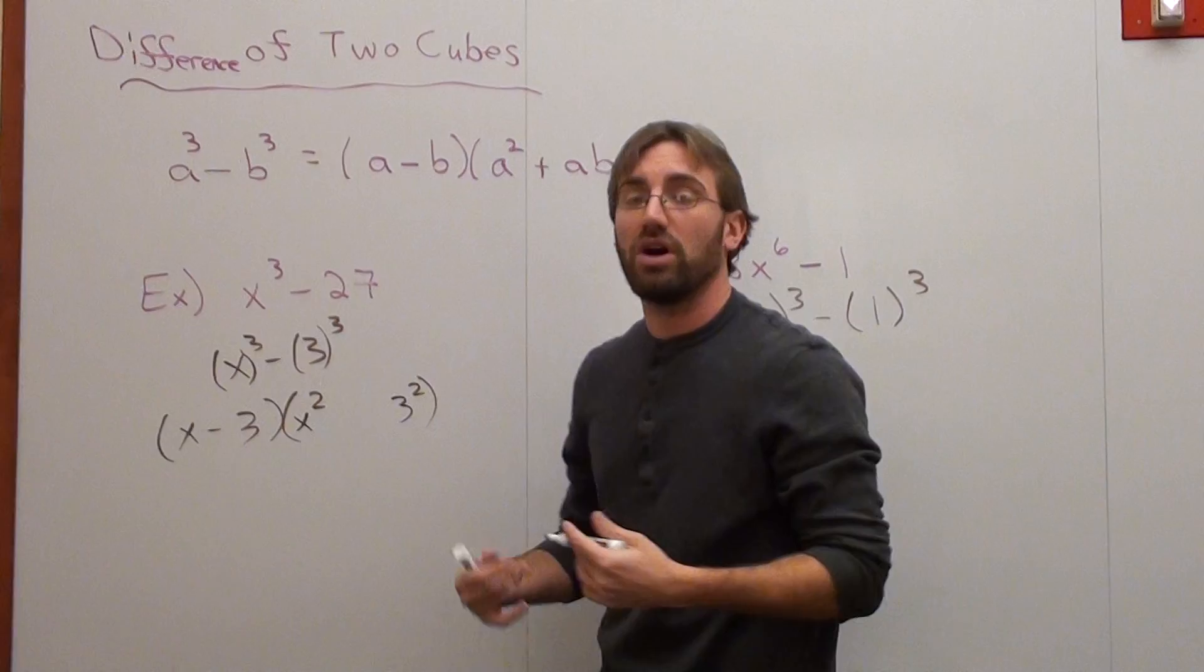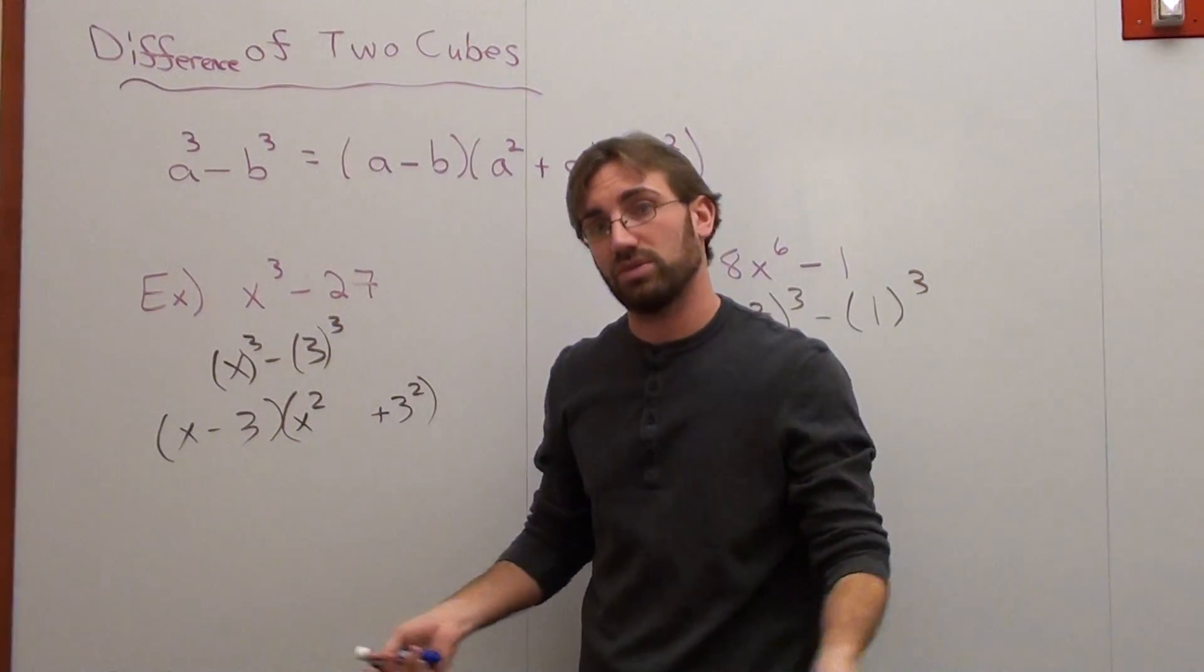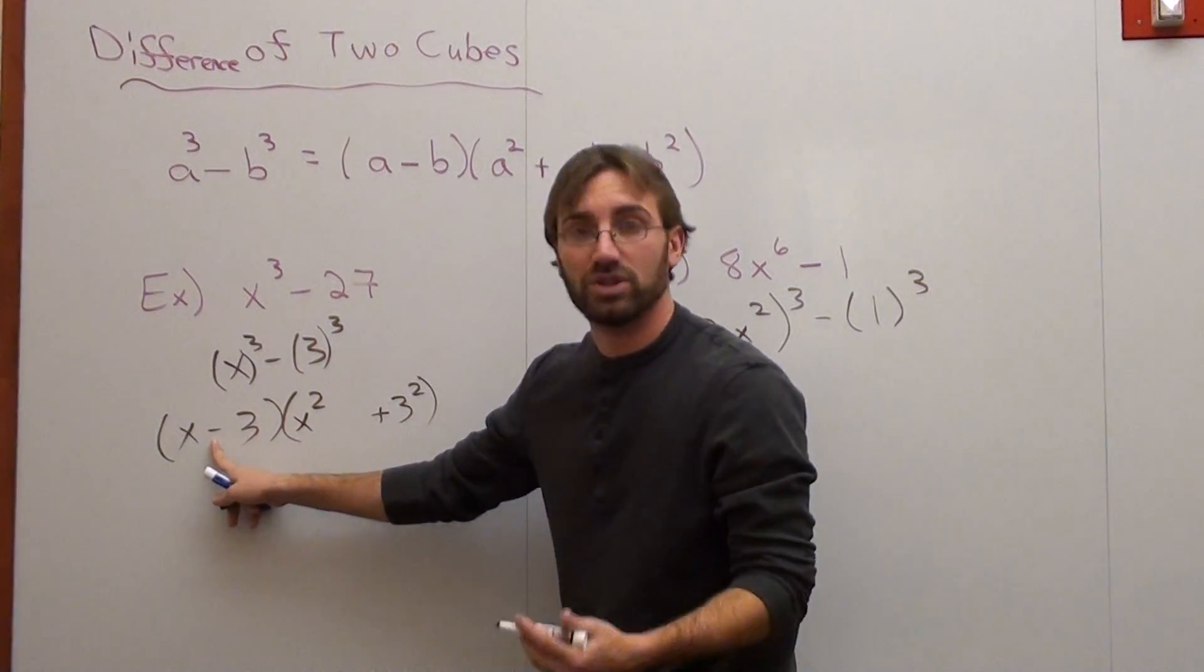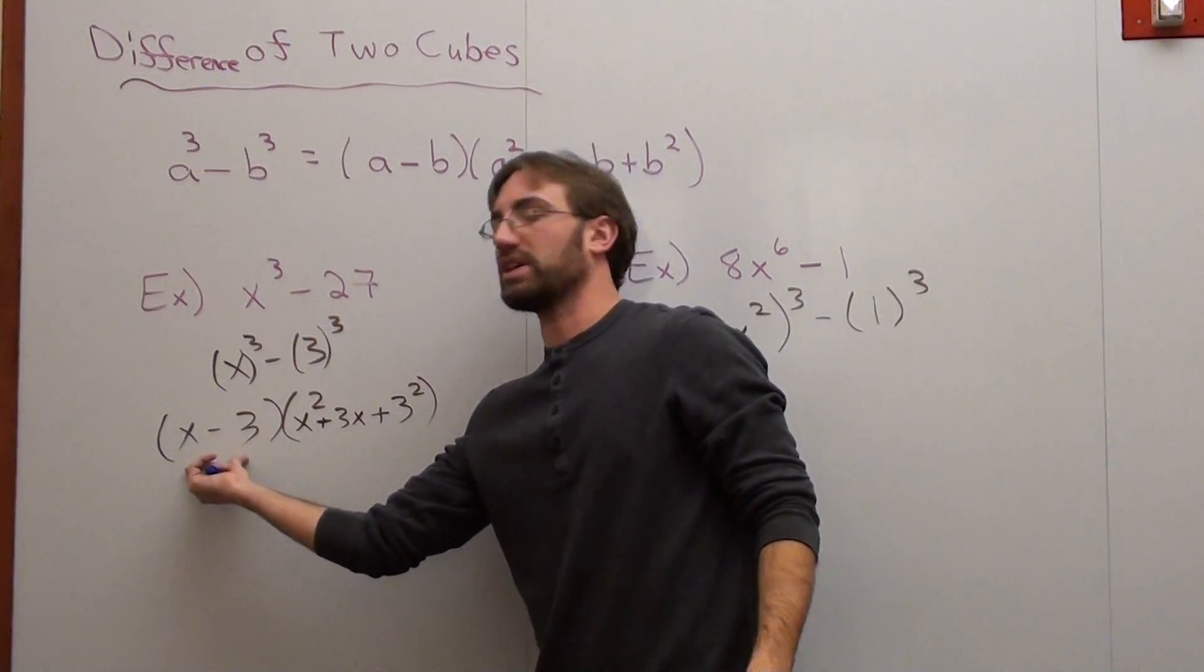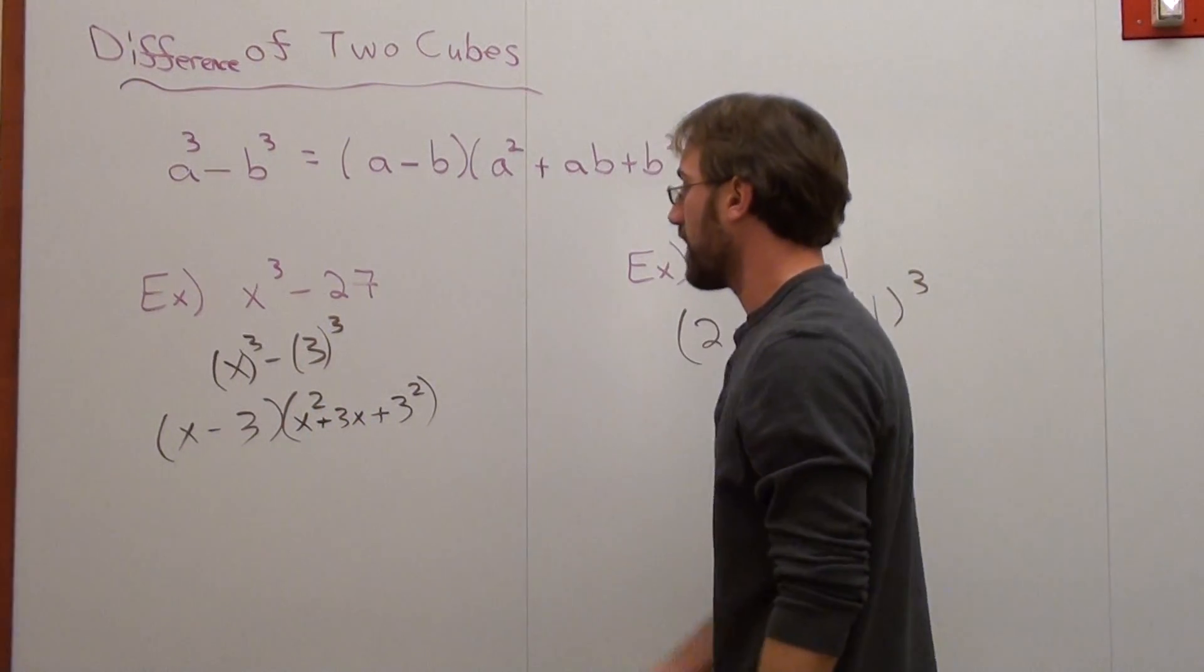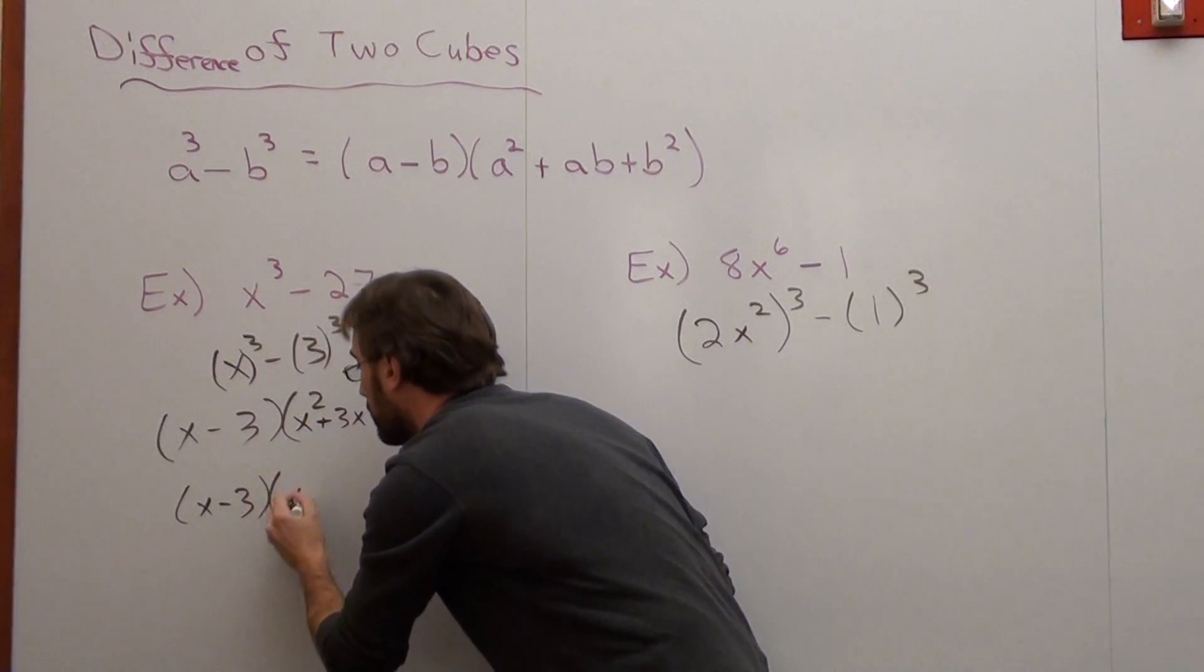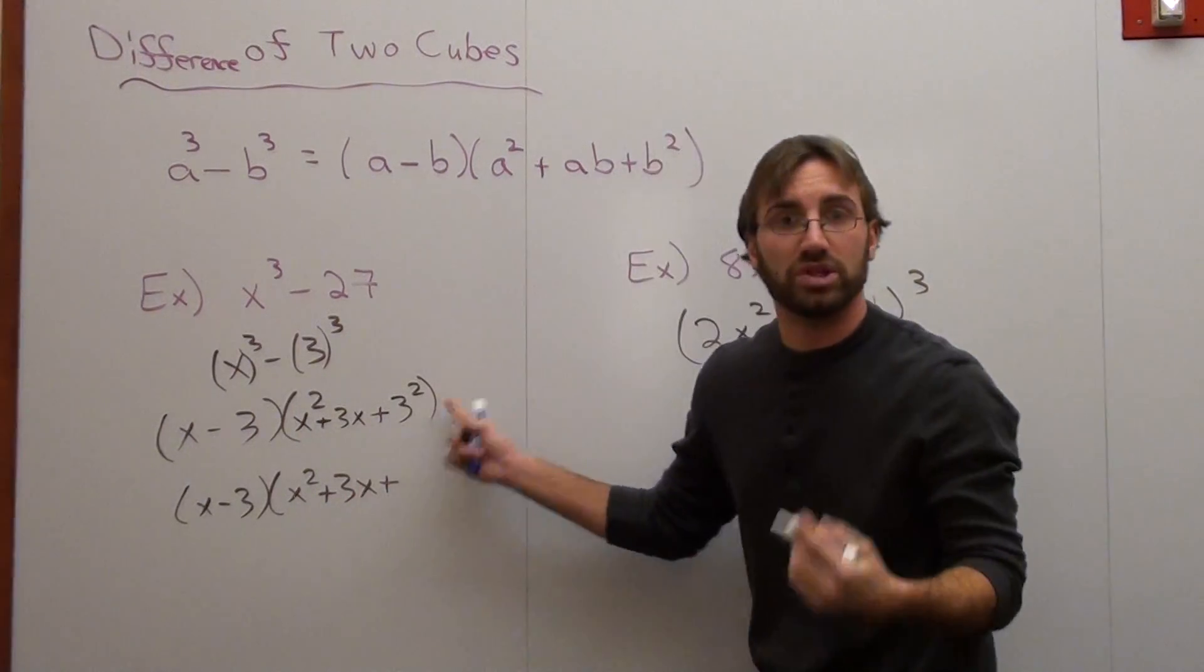Something that you always have to know is that the last term is always positive, whether it's the difference of 2 cubes or the sum of 2 cubes, when you're factoring it in this particular form. And then you just take the opposite sign, which is positive, and combine them. 3 times x is 3x. We're going to simplify this a step further. Don't leave it as 3 squared, make it 9.